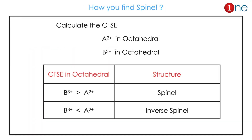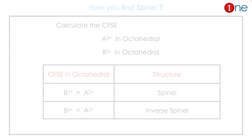To find whether a compound is spinel or not, you just have to calculate the CFSE of both the divalent and trivalent cations. If you find the trivalent cation has a higher CFSE, it is spinel. If the trivalent cation has a lower CFSE, it is inverse spinel.